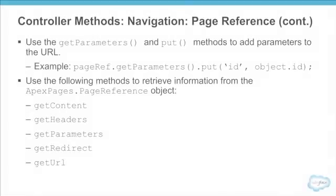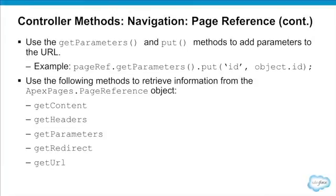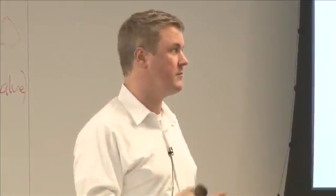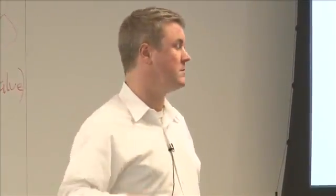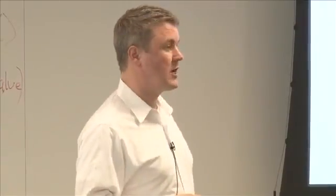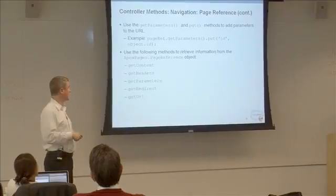On a page reference there are a number of things you can set and access. GetParameters is the mechanism by which we access parameters — whether HTTP query string parameters or the contents of a form submitted to the server. GetParameters is most commonly used to access HTTP query string parameters.